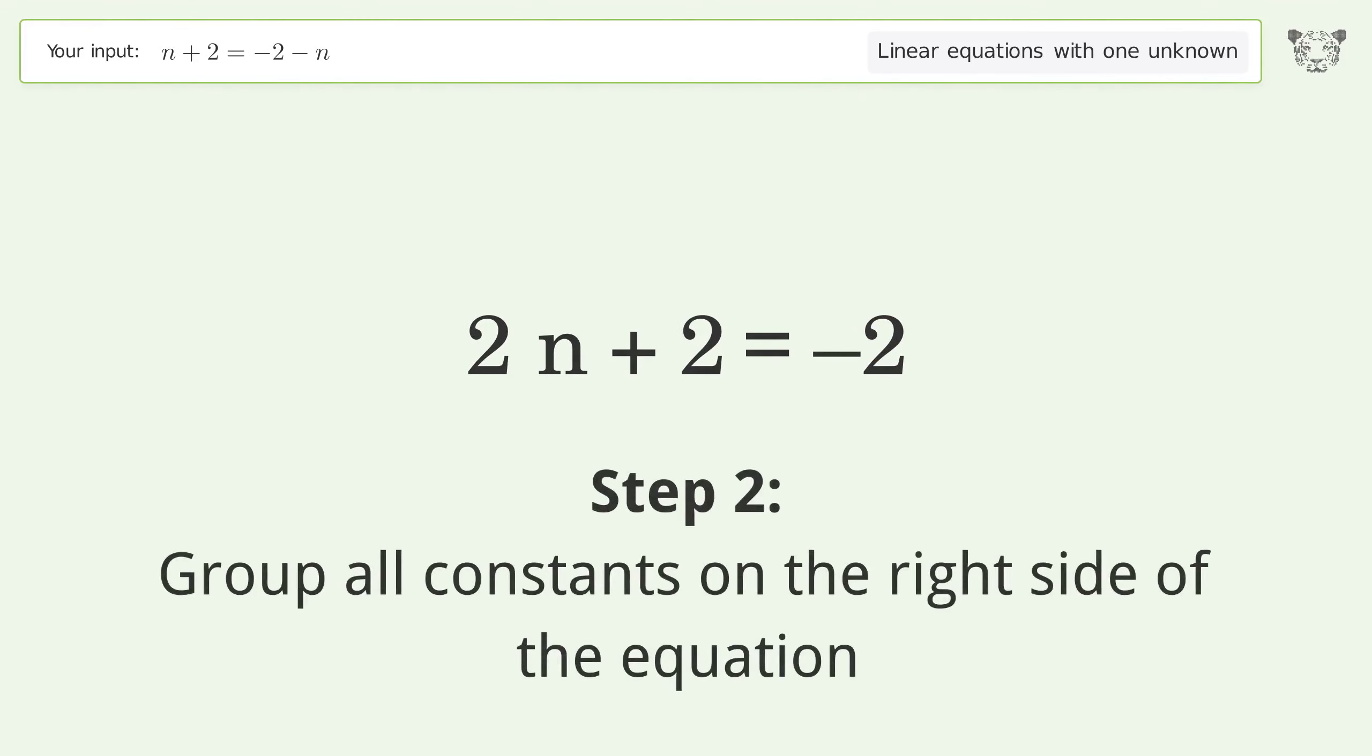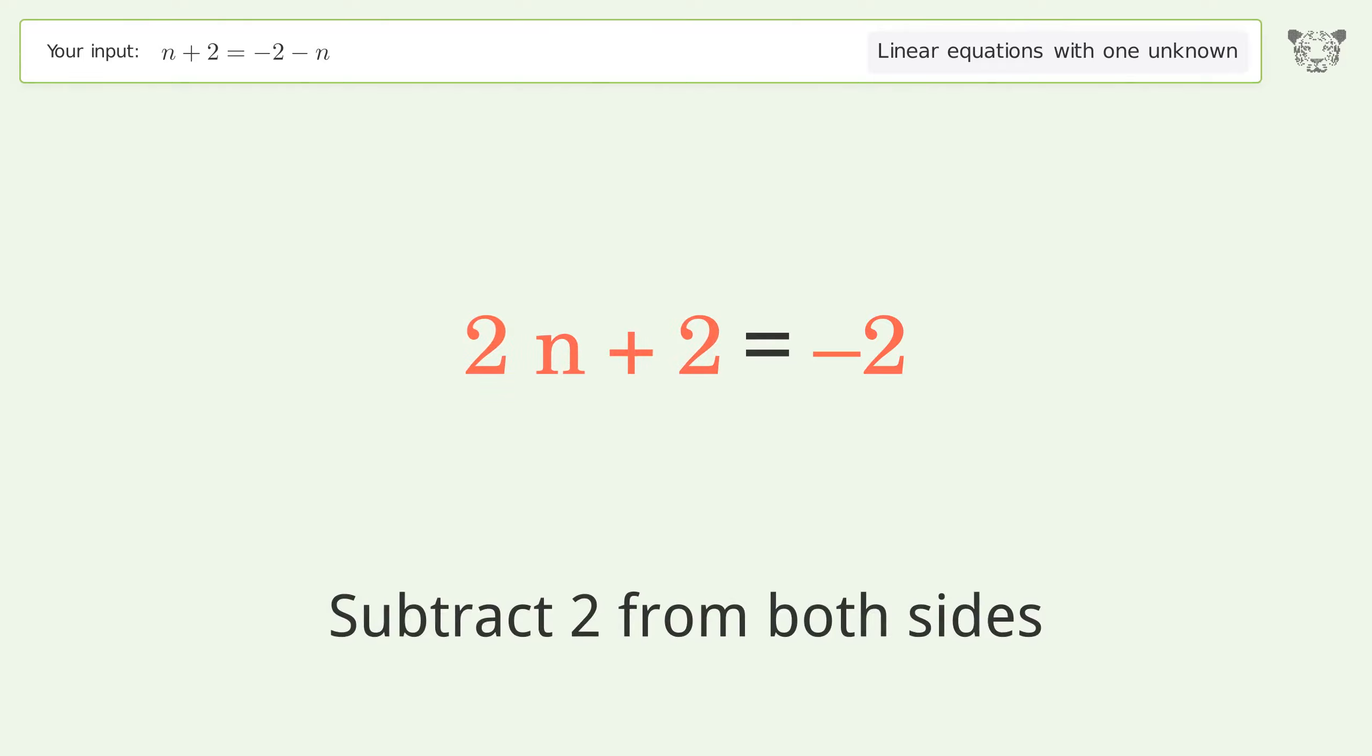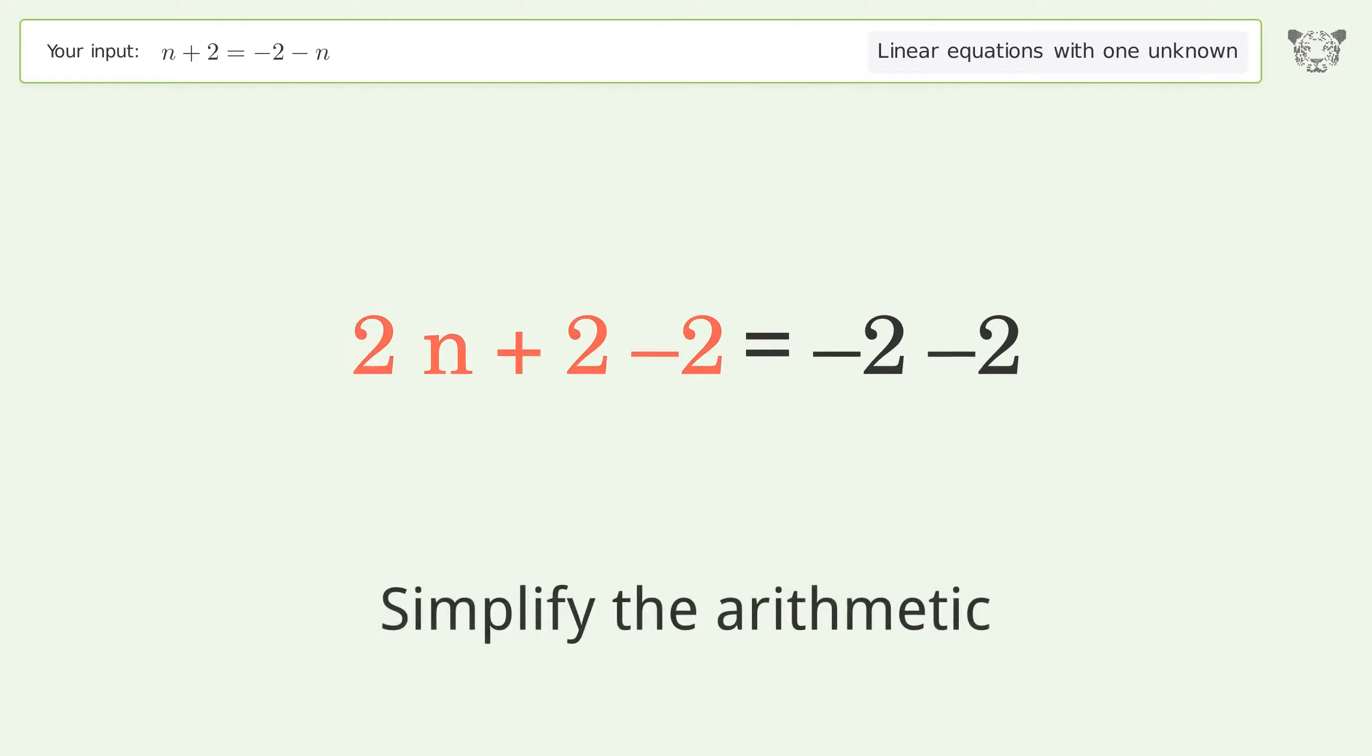Group all constants on the right side of the equation. Subtract 2 from both sides. Simplify the arithmetic.